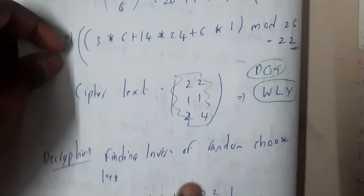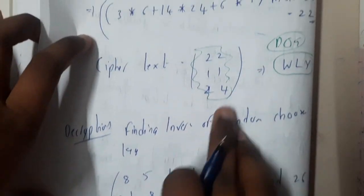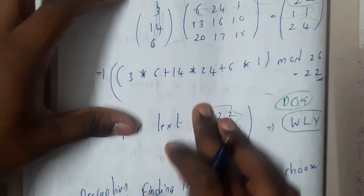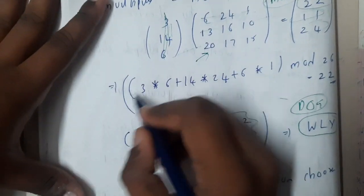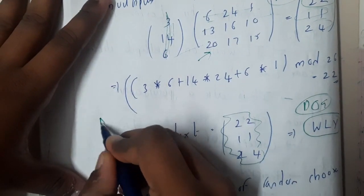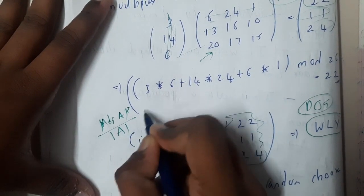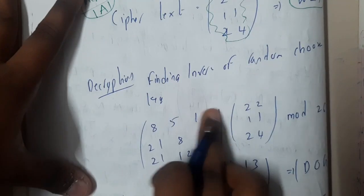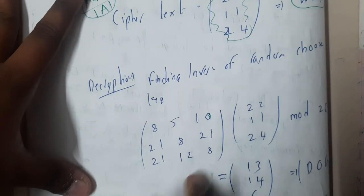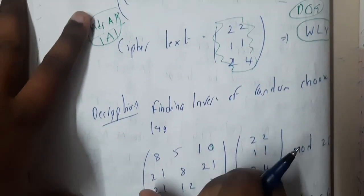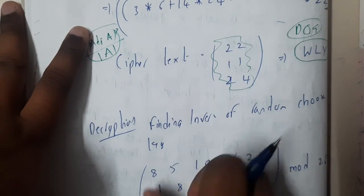Now we encrypted it successfully. Your question will be, okay, now I encrypted, how will you be decrypting it? Decrypting is nothing but initially you will be doing the inverse of our key. Inverse of our key is initially you will be calculating the adjacent of that matrix, then you will be calculating the determinant and dividing it.